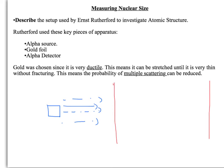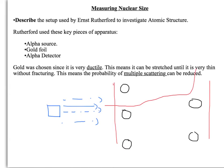Why gold? Gold is highly ductile, which means it can be stretched until it's very thin. The advantage of being thin is it prevents multiple scattering. If the foil is many atoms thick, there are many nuclei, and an alpha particle could be scattered multiple times — for example, scattered by one nucleus and then another. By minimising the thickness, you minimise the opportunity for multiple scattering, so ideally each particle is scattered only once.